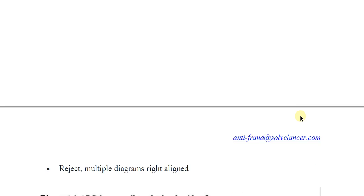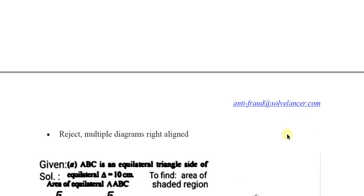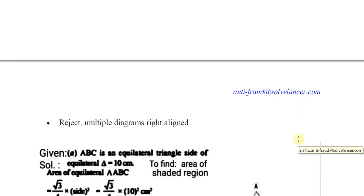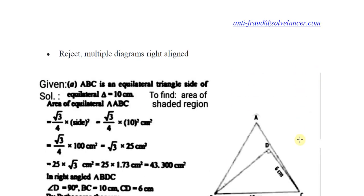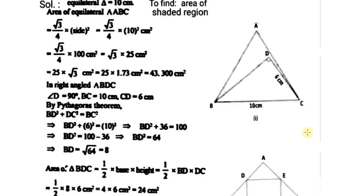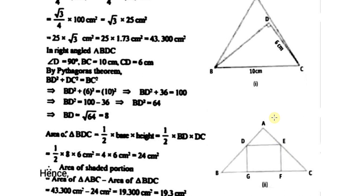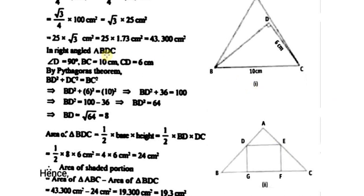For the reject case with multiple diagrams that are right aligned: if you see a solution where two images are present — a first and second diagram — since there are multiple images, they should be left aligned, not right aligned. One image should be on the left and the other should also be on the left side.